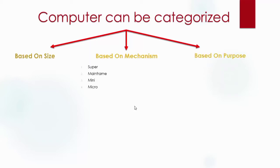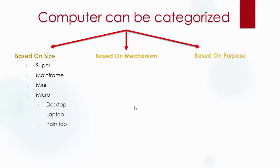Based on size, computers are classified as: Number one, supercomputer. Number two, mainframe computer. Number three, minicomputer. Number four, microcomputer. Microcomputer is very popular and includes desktop computer, laptop computer, palmtop computer, notebook computer, tablet computer, and workstation computer.